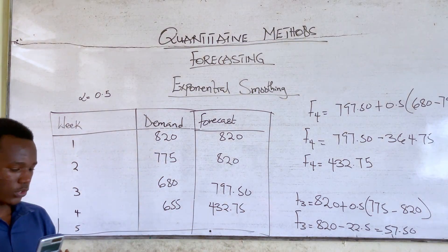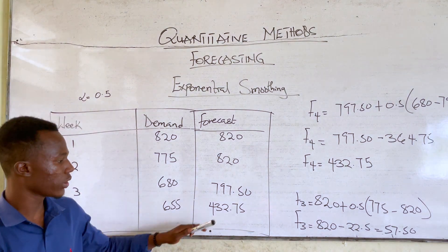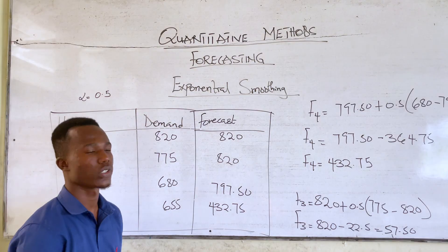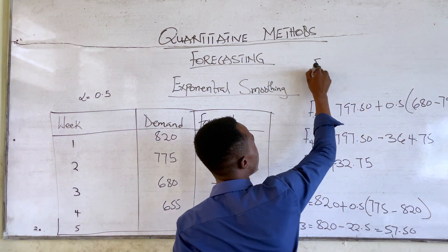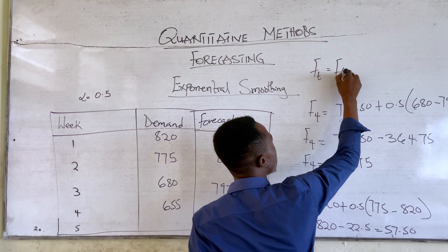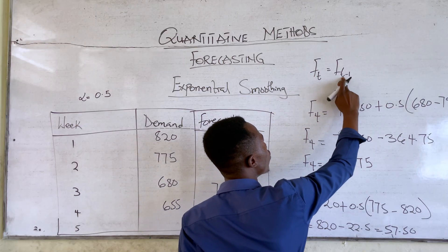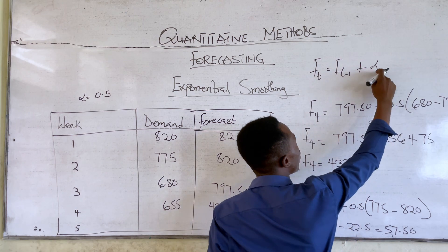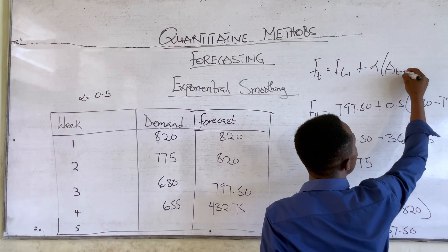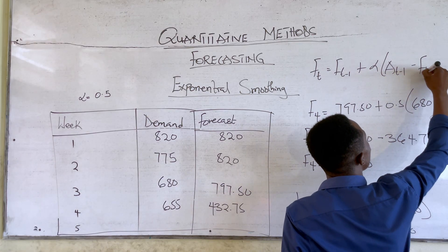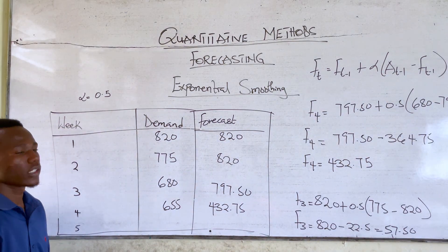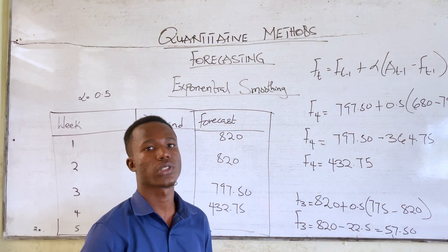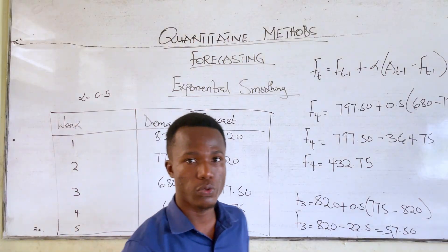The forecast for week 5, I'm going to leave for you. Calculate the forecast for week 5 and provide the answer in the comments to verify it. Just know the formula: the forecast for the current period equals the forecast for the previous period plus the constant multiplied by the actual value for the previous period minus the forecast for the previous period. This brings us to the end of exponential smoothing. Next time we will talk about forecast errors. Thank you.